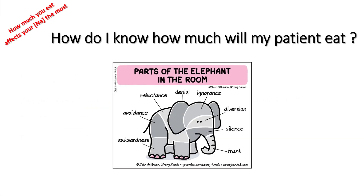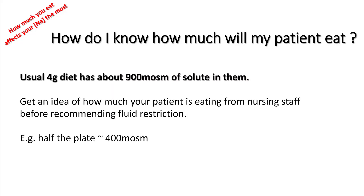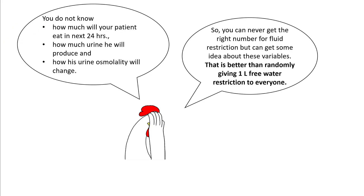So how do you know how much a patient will eat? A usual 4-gram sodium diet has about 900 milliosmoles of solute. You can get an idea from nursing staff about how much of the plate the patient has eaten — if they eat half the plate, they're possibly eating around 400 milliosmoles. There are inherent guesses in this equation: how much the patient will eat in the next 24 hours, how much urine they'll produce, and how urine osmolality will change. There is some guesswork, but this is an educated guess — better than putting everyone on one liter free water restriction.